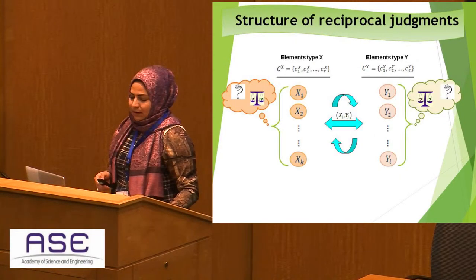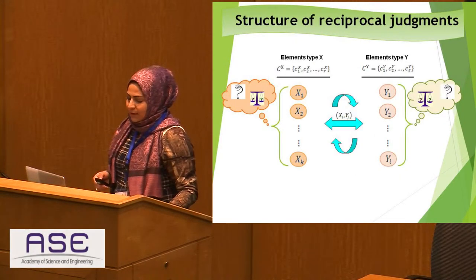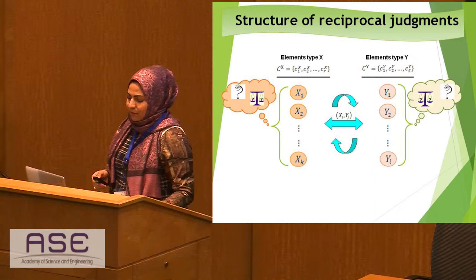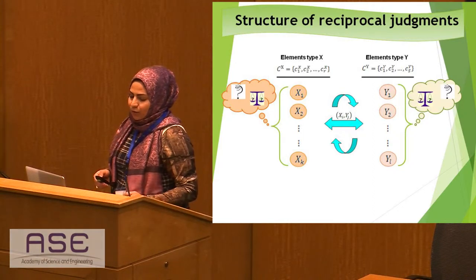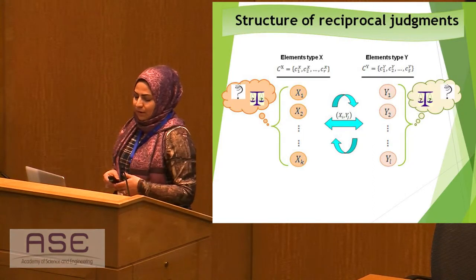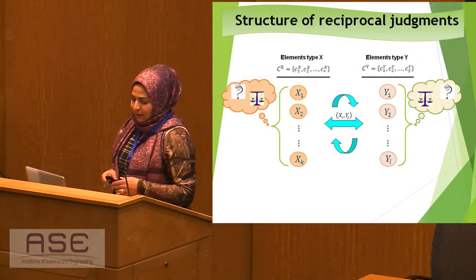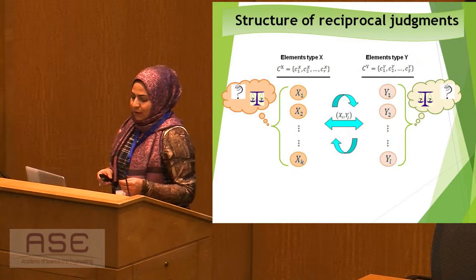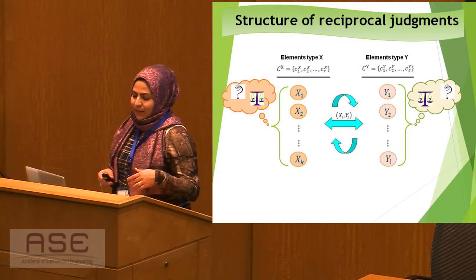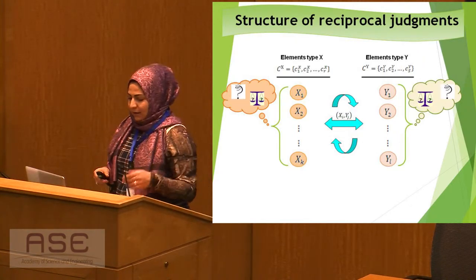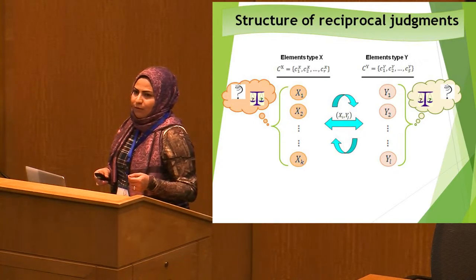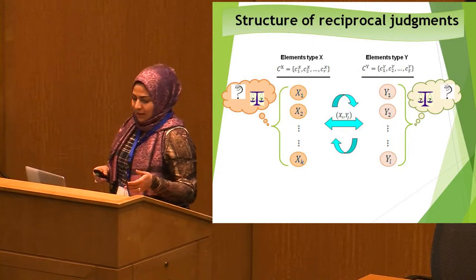Since the model is reciprocal, we consider the system as consisting of two distinct types of elements, which at the same time could take both the alternative and arbiter roles toward each other. For the arbiter role of x-type elements, y-type elements would have the role of alternative, and vice versa.